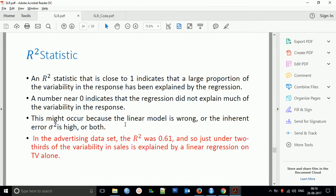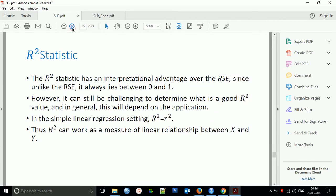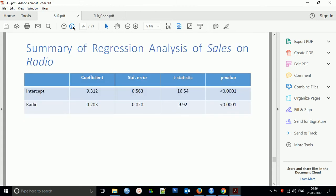Here we're getting 0.61. For practical purposes, if R-squared is more than 0.5, it's explaining a good part of the variability in sales based on TV alone. R-squared has an interpretation advantage over RSE. Unlike RSE, it always lies between 0 and 1, though it can be challenging to determine what constitutes a good value depending on the application.